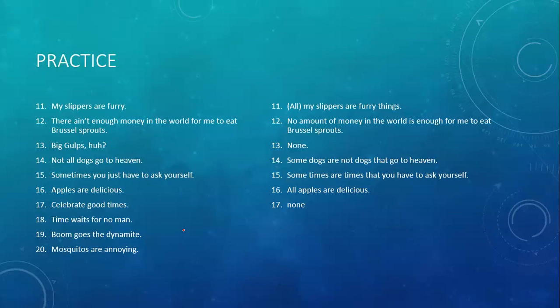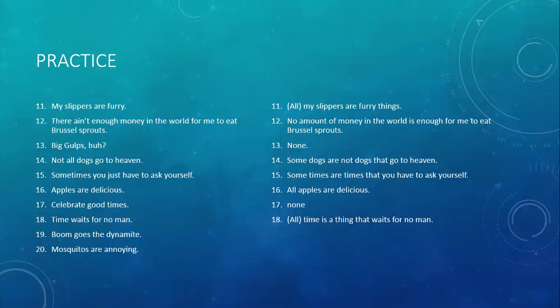Time waits for no man. Now when you see 'time waits for no man,' this is a saying — stuff like that. Sometimes they don't mean what they literally say. But for this one, let's say we took it literally. If you wrote out the proposition, it would be: all time is a thing that waits for no man. When you think about it literally, it seems like it doesn't make sense — time is a thing that doesn't wait for man? What you're really saying is that time keeps going on. But if you took it literally, that's what it would mean.